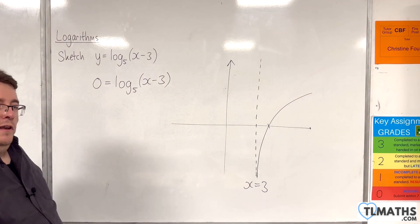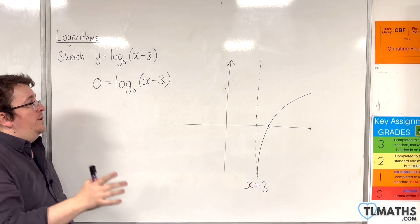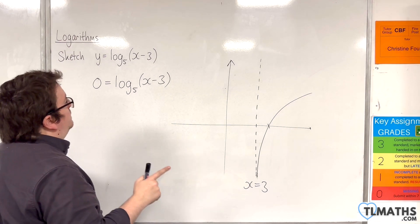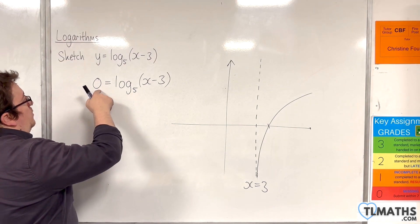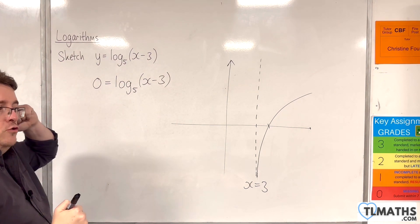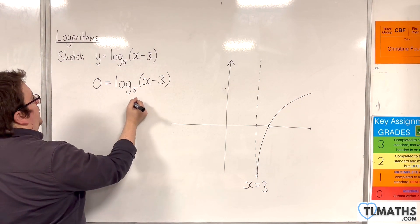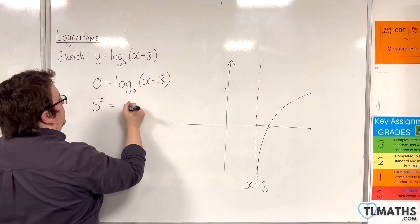Now going from logarithmic form to exponential form, what we do, if you haven't looked at this yet, will be 5 to the power of 0 is x take away 3. So it unravels the logarithmic form for us.